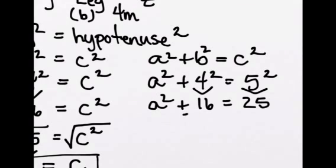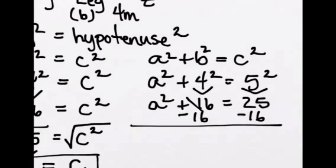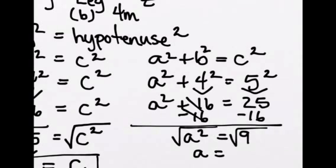We've got to isolate A, so we're going to subtract 16 from both sides of our equation. So A squared is going to equal 9 by subtracting 16 from both sides, square root both sides because we've got to get A by itself. And A equals 3 because the square root of A squared is A equals the square root of 9, which is 3.